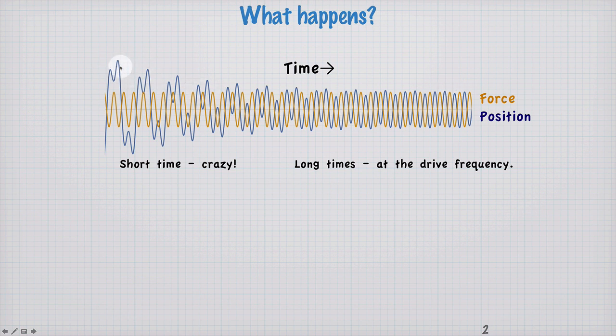What's happening here is at short times, we see behavior due to the natural response of the oscillator. We see this long frequency, that's the frequency due to the natural dynamics of the oscillator, and this higher frequency term, that's due to the driving. So we see a mixture of the natural response, that is the solution of the homogeneous equation.